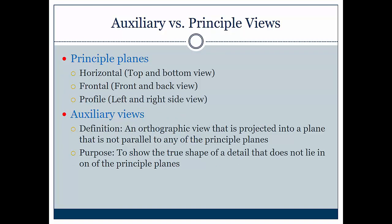This is slightly a review. We've talked about principal planes: the horizontal plane, the frontal, and the profile plane. The definition of an auxiliary view is an orthographic view that is projected onto a plane that is not parallel to any of the principal planes. So the purpose is to show the true face or true shape of a detail that does not lie on the principal planes.